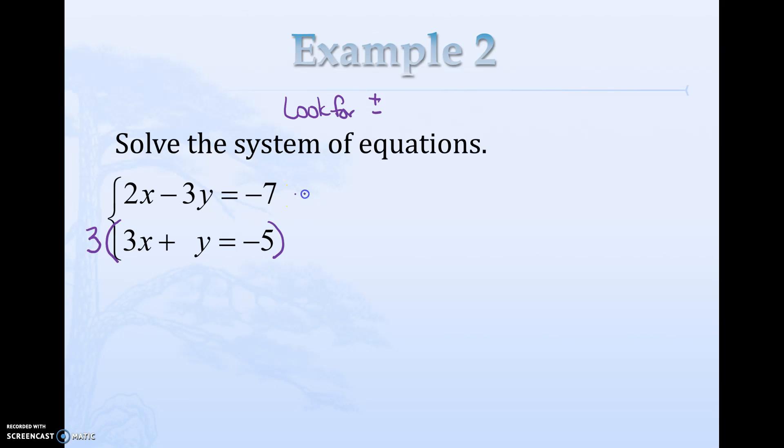The first equation I'm going to leave it as is, 2x minus 3y equals negative 7. The second equation we are going to multiply every single thing in that equation by 3. 3 times 3x is 9x, 3 times y is positive 3y, equals sign, 3 times negative 5 is negative 15. Now we're ready to add. 2x plus 9x is 11x, the y's will cancel each other out, negative 7 plus negative 15 is negative 22.